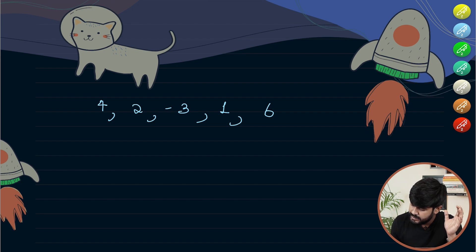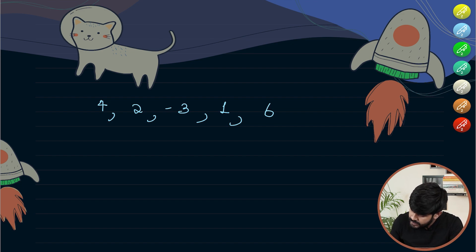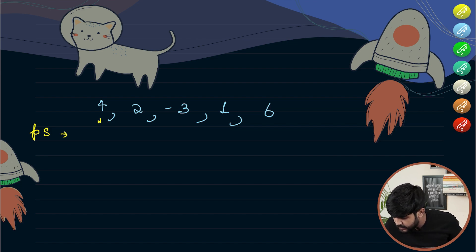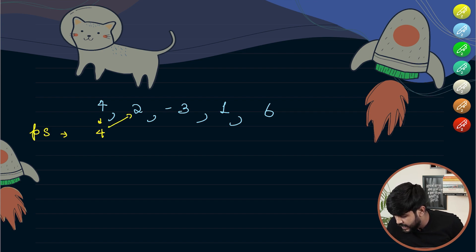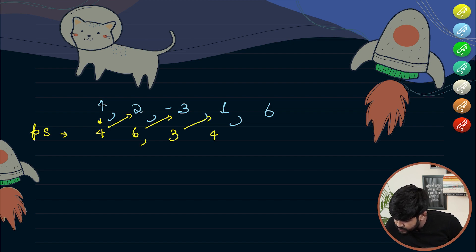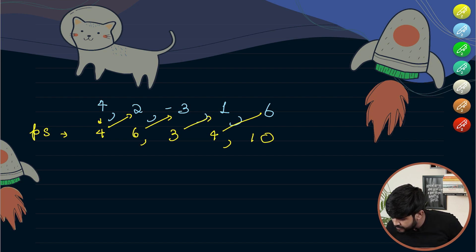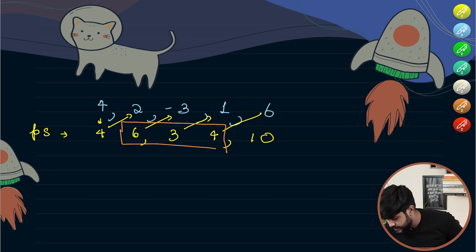An optimized approach uses the prefix sum — that's a prerequisite here. For the array [4, 2, -3, 1, 6], the prefix sums are: 4, 6, 3, 4, 10. The point where we have a subarray with zero sum is where the prefix sum repeats — notice that 4 appears twice.